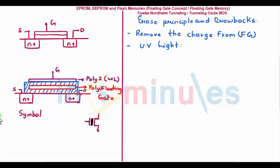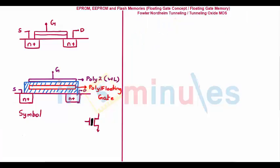In order to allow partial erasing of a particular part of the memory, and to do it electrically rather than through ultraviolet light, we move to the next type of memory: EEPROM, or Electrically Erasable Programmable Read-Only Memory.